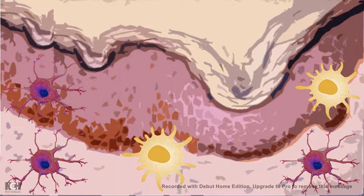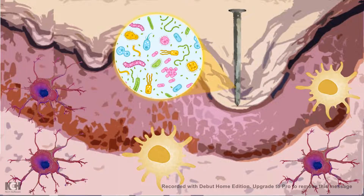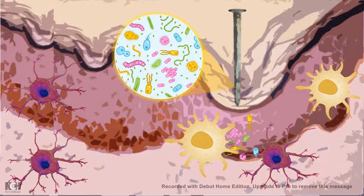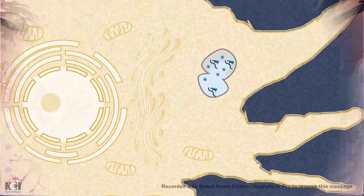Let's bring out a context. This is your skin, and let's say you are pricked by a rusty nail. Along with the rusty nail, a lot of pathogens such as bacteria and other harmful pathogens enter your body — entering the area under the skin. Under the skin, which acts as a physical barrier, there are many patrolling cells which are macrophages or dendritic cells.